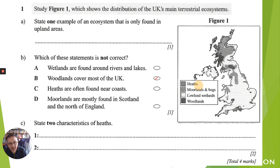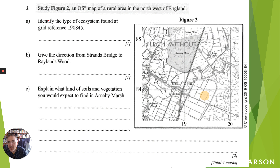Now identify the type of ecosystem found at a given grid reference. We're doing our six-figure grid references - a quick recap. Taking 190: we find that line along 190, then 845. Find 84, then imagine splitting the square into ten pieces and go about five up. Where these two lines meet is roughly that point, and using the key we can see this is a woodland ecosystem.